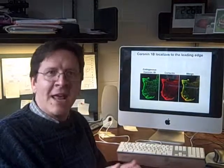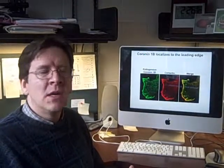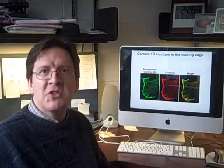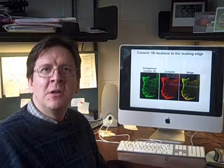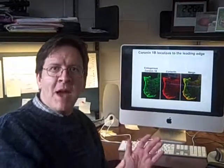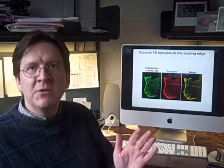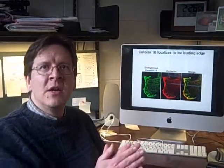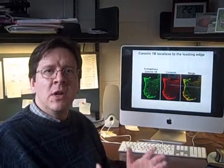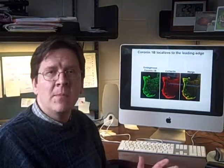It turns out that cortactin is a protein that affects the formation of these branches, and coronin is a protein that helps take them apart. So it makes sense that the red band would be a little further out where the branches are being born, and the green band for coronin would be sort of shifted further back in the sequence. That's what I mean about the arrangement in space is really a representation and a snapshot of what's happening in time.